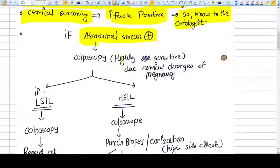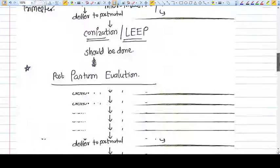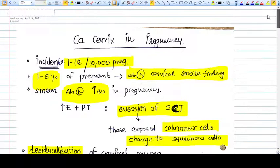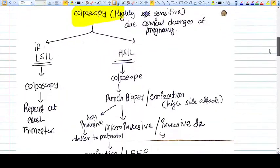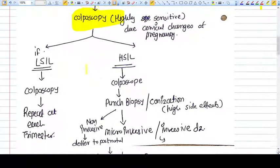If you find an abnormal smear, the next step is colposcopy. Colposcopy is highly sensitive due to cervical changes of pregnancy - increased estrogen and progesterone, eversion of the cervical columnar junction, squamous metaplasia, higher vascularity, and larger cervix size.